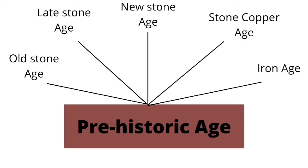The prehistoric period was largely divided into five parts: the old stone age, also known as the Paleolithic period; the late stone age, also known as the Mesolithic period; the new stone age, also known as the Neolithic period; the Chalcolithic period, also known as the stone-copper age, where copper was invented and largely used; and next came the Iron Age, which was very important for the development of India.